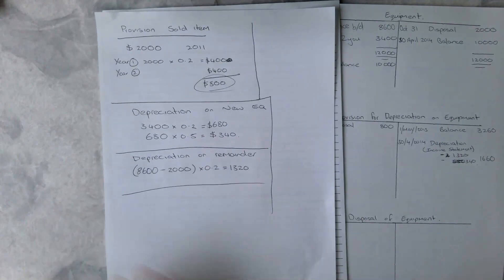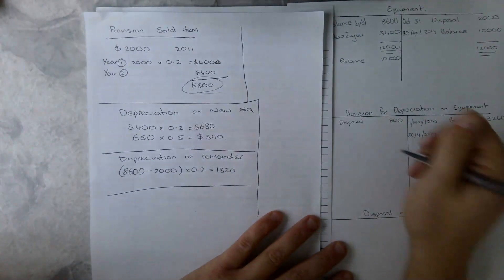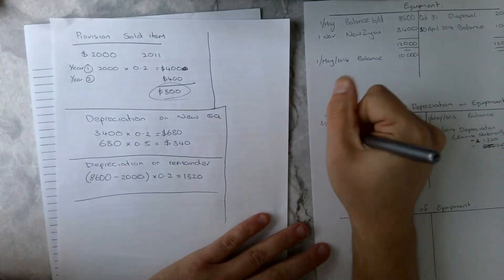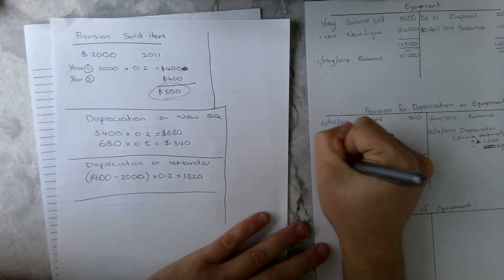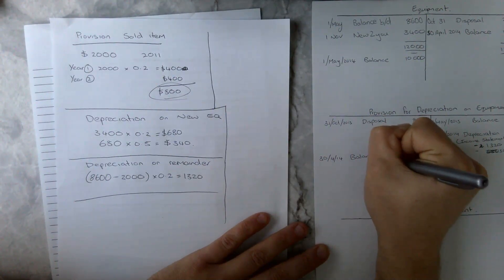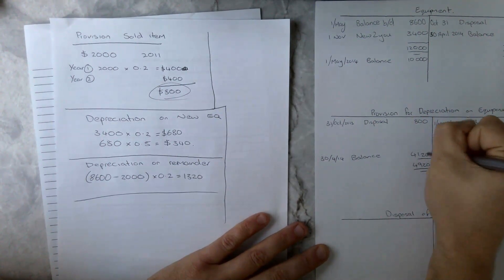And that can close off that account. And that will close off that account at $4,920. And that can be our closing balance. Again, we're just going to minus off the $800 just to give us a nice balance figure. And remember that is going to be on the 30th of the 4th, 2014. Balance of $4,120.